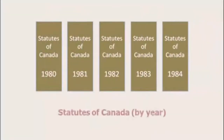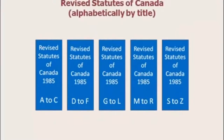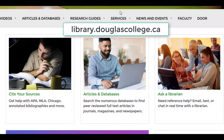Statutes are published at the end of each parliamentary session and are filed in the order in which they were enacted. On occasion, all of these statutes are pulled together and put in alphabetical order in one complete set of statutes called the Revised Statutes. Let's navigate over to the Douglas College Library Online Guide to Legal Citation to see some examples of how to cite Canada's statutes.